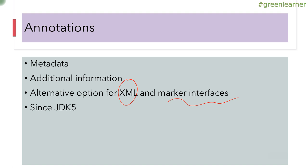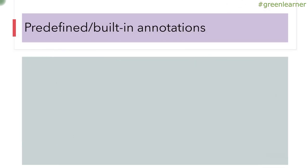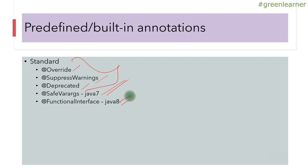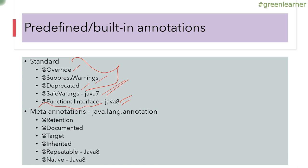Annotations have been available since JDK 5 — they were not part of JDK 1 but were introduced in Java 1.5. There are some predefined built-in standard annotations: @Override, @SuppressWarnings, and @Deprecated have been there since Java 1.5. @SafeVarargs was introduced in Java 7, and @FunctionalInterface was introduced in Java 8.